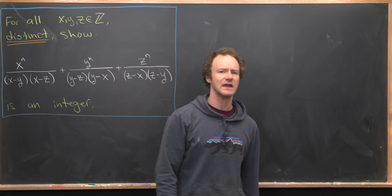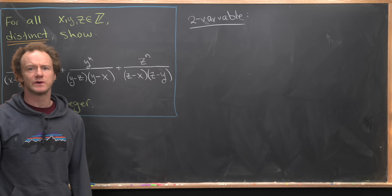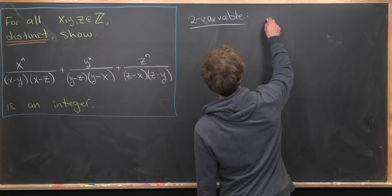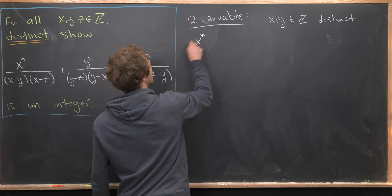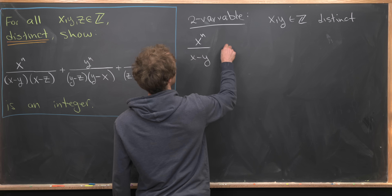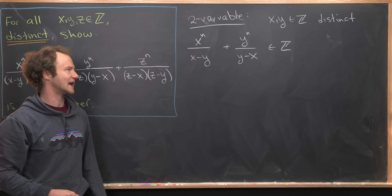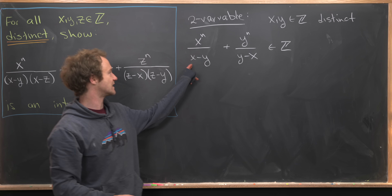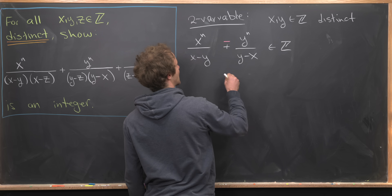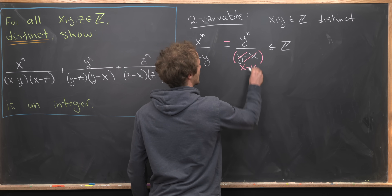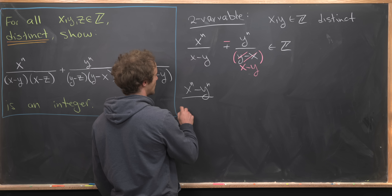Before looking at the main problem, let's investigate the two-variable version to build some intuition. The two-variable version asks: for distinct integers x and y, show that x^n over (x minus y) plus y^n over (y minus x) is an integer. This isn't so hard — we find a common denominator by multiplying through, flipping the sign of (y minus x) to (x minus y), and writing this as (x^n minus y^n) over (x minus y).